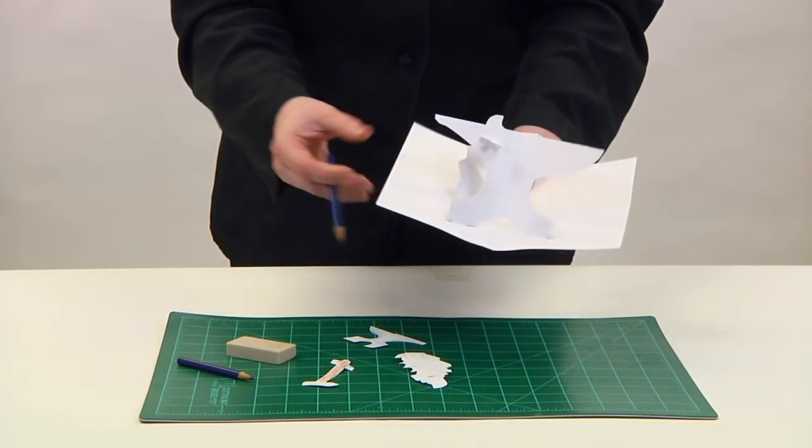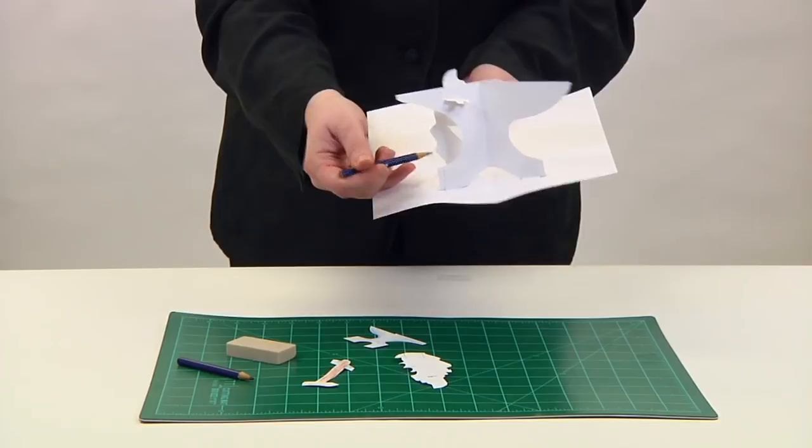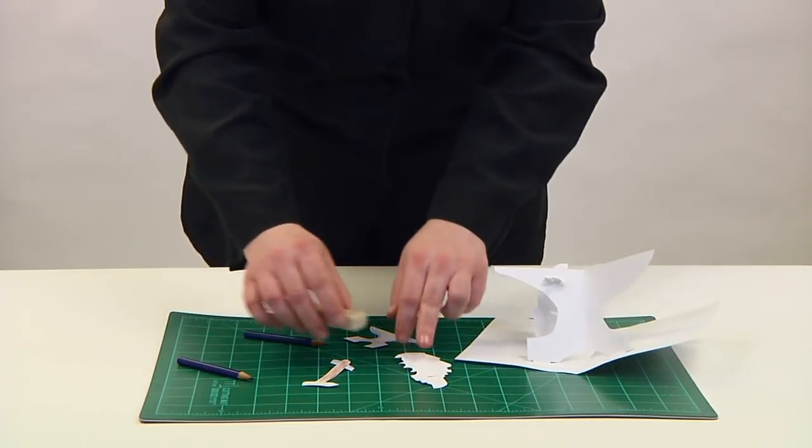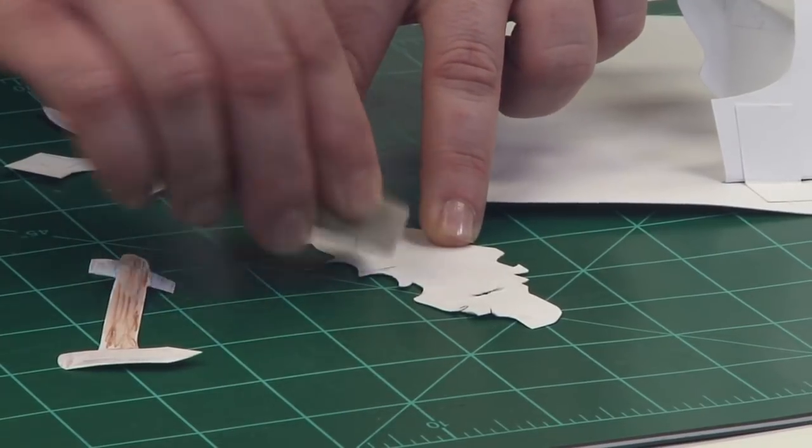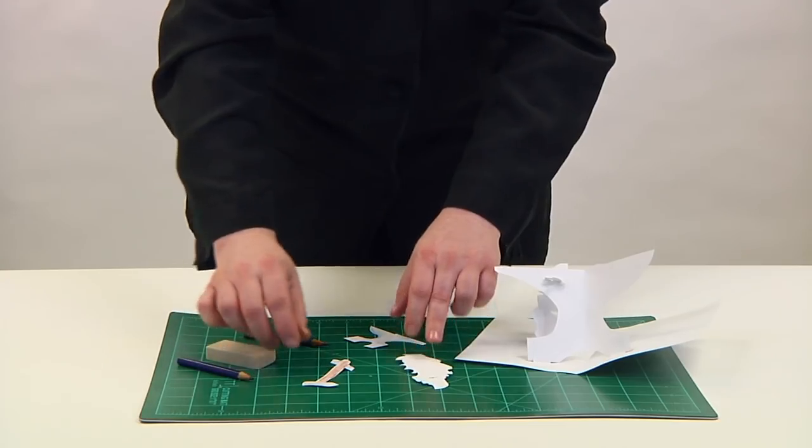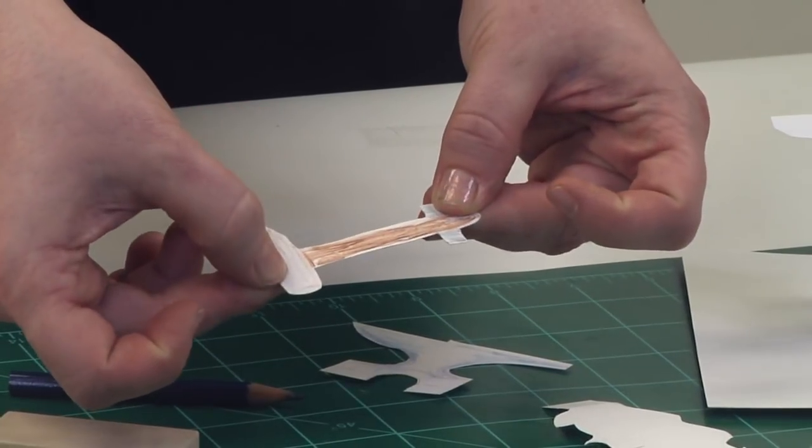Color the piece before assembling. Often it is too difficult to get into areas with pencil or brush after the construction. Be sure to erase all pencil lines before applying your medium of choice. And remember to color both the front and the back of all pieces, as the finished work will be viewed from multiple angles.